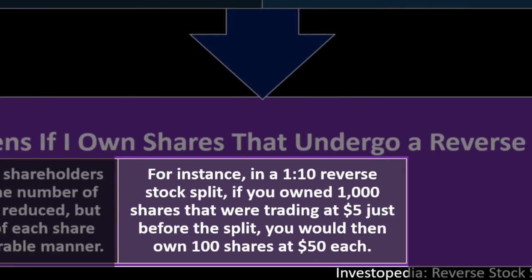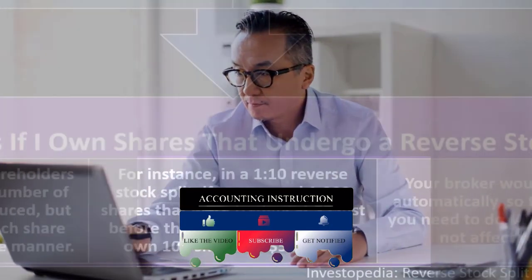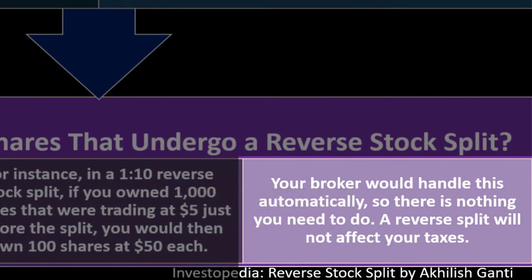For instance, in a 1-for-10 reverse stock split, if you own 1,000 shares trading at $5 just before the split, you would then own 100 shares at $50 each. As an owner of the shares, the value of your ownership doesn't change — you just have fewer shares adjusted upward in price per share. Your broker would handle this automatically; there's nothing you need to do.